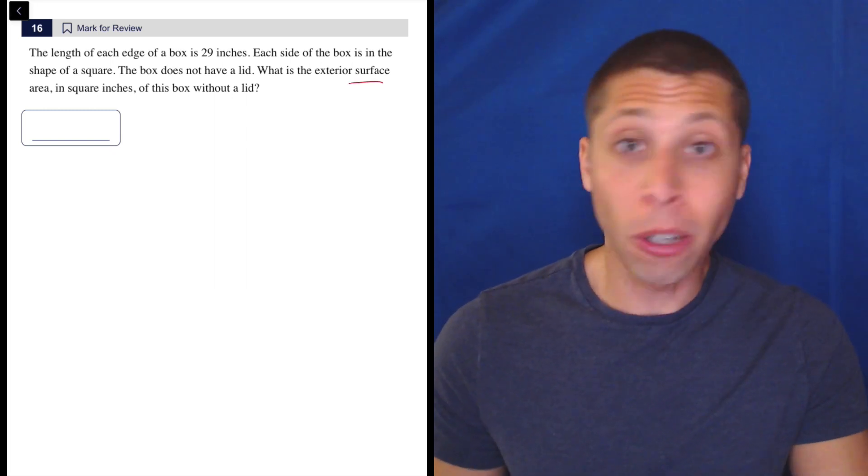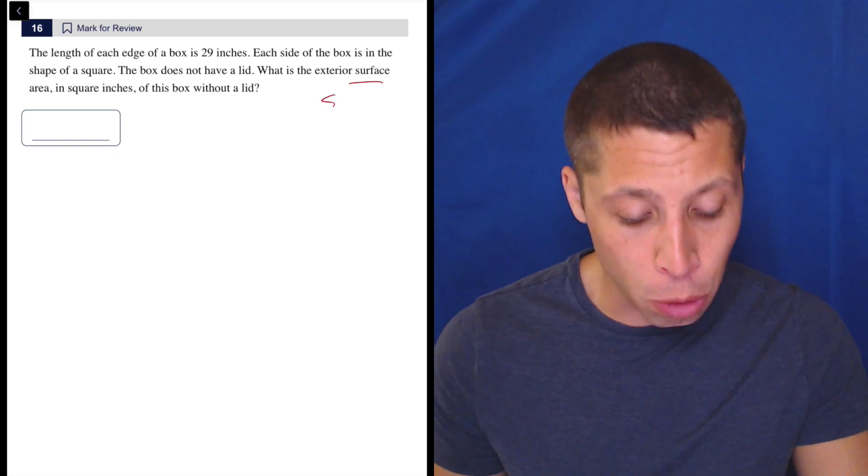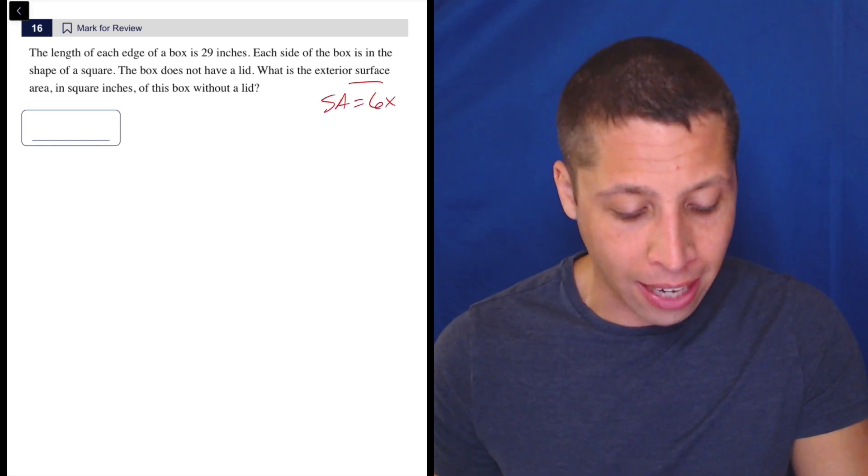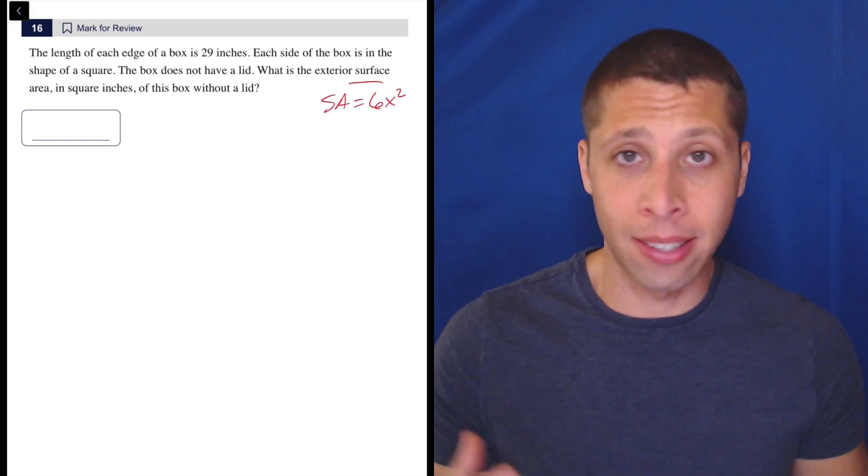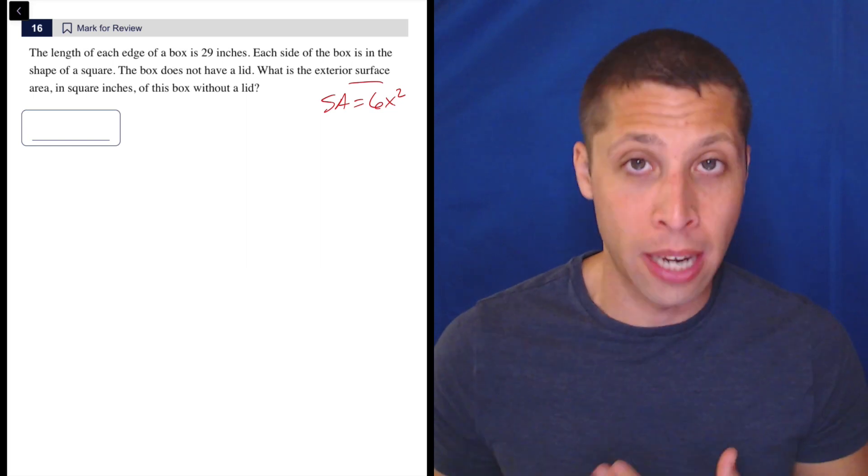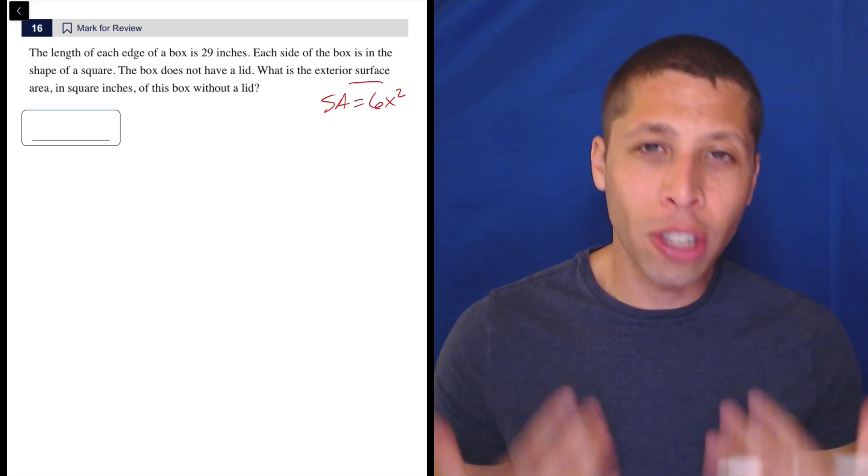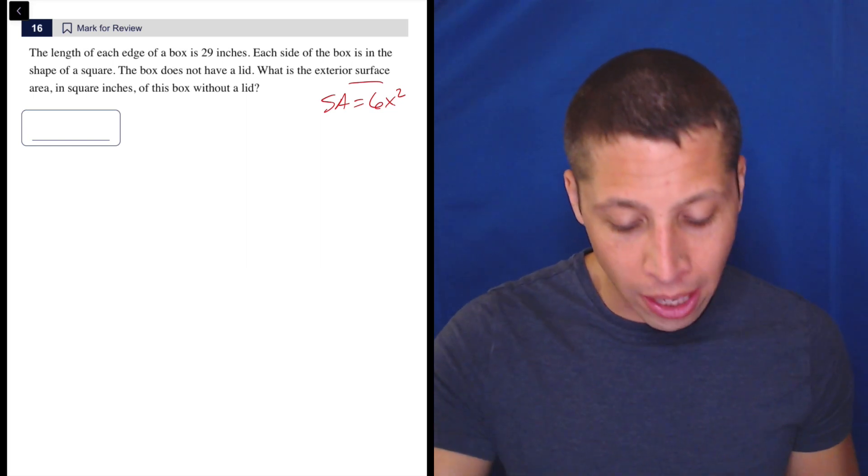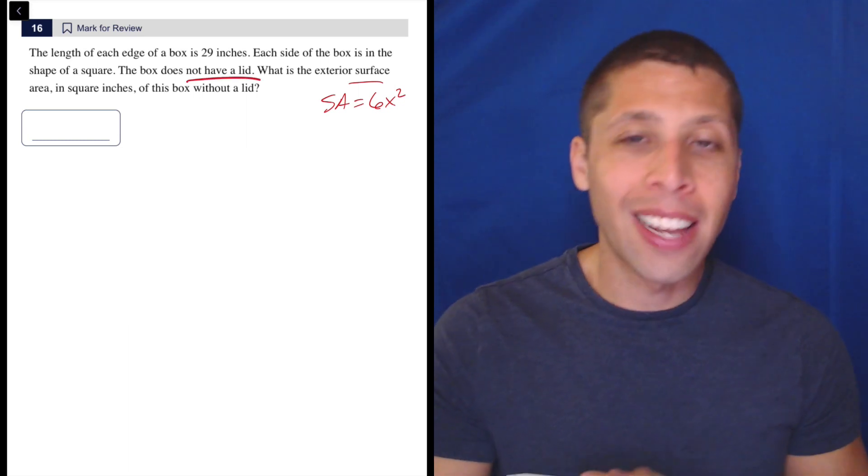So you might be looking at this and thinking, oh surface area, I know the surface area of a cube is going to be 6x squared, where x is the side of the cube, so in this case it would be 29. But the reason that doesn't work is they've changed the situation. The story is saying it's a box that does not have a lid.